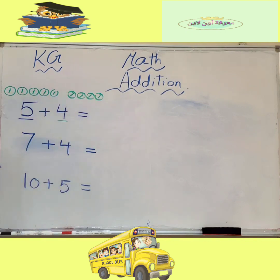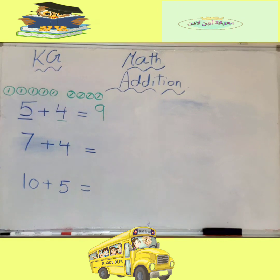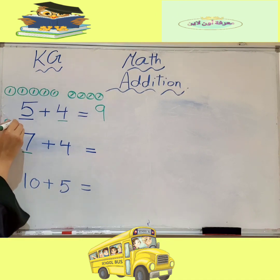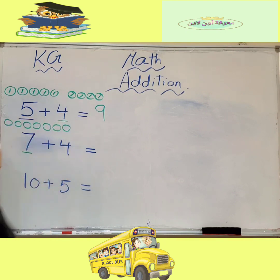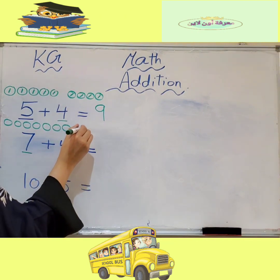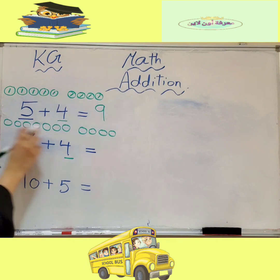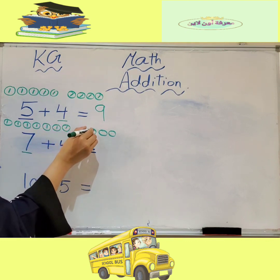Eight, nine. So five plus four equals nine. Okay. Seven plus four — this is number seven, let's draw seven circles: one, two, three, four, five, six, seven. This is number four, let's draw four circles: one, two, three, four. Count all: one, two, three, four, five, six, seven, eight, nine, ten.